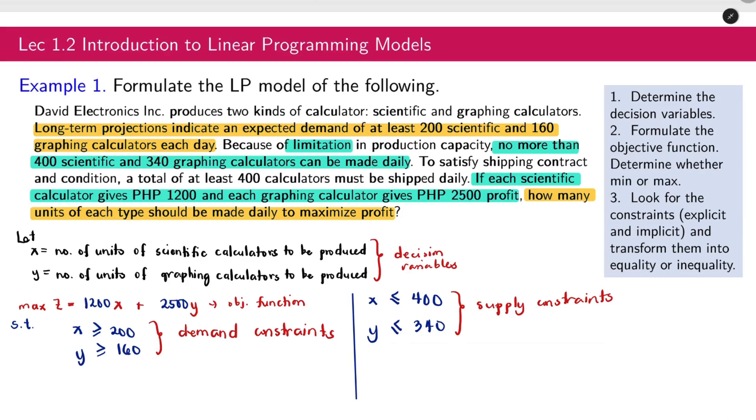Next, to satisfy shipping contract and condition, a total of at least 400 calculators must be shipped daily. How will we write that in inequality form or equality? X plus Y at least, so greater than or equal to 400. So this is the shipping contract. These are the constraints that are explicitly stated here.